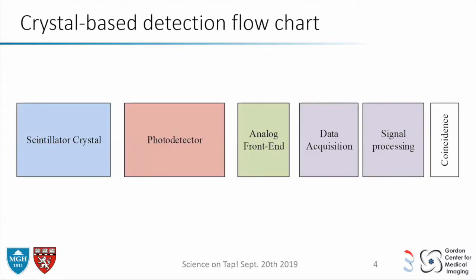So how does a scanner work? There's a basic detection chain that starts from a scintillating crystal in most systems. When it absorbs the gamma, it emits light. Then you have a photodetector, some analog front-end electronics, and then digital electronics for data acquisition. You can do signal processing to improve performance, then send it out, make the pairs, and it goes to the reconstruction engine.